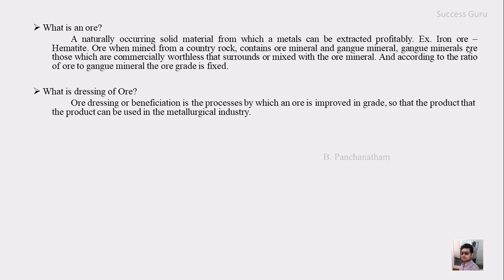Ore dressing and beneficiation — both have the same meaning. It is the process by which an ore is improved in grade. Earlier we said the grade of ore is decided by the ratio of metallic mineral to gang mineral. So the dressing of ore means improving the grade so that the product can be used in the metallurgical industry. In other words, the process of removing the gang minerals is called ore dressing.